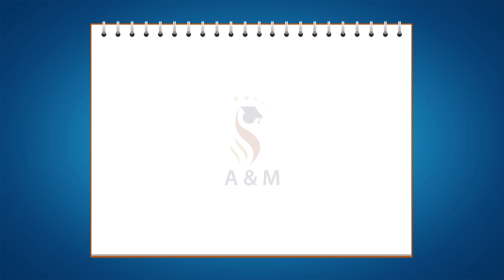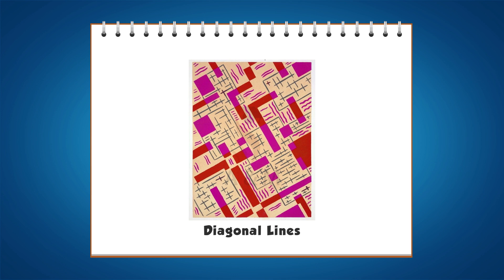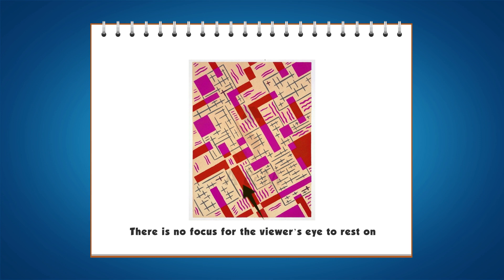Let's take an example of diagonal lines. This print design is entirely made up of diagonal lines and shapes. The diagonal lines lead in different directions and there is no focus for the viewer's eye to rest on. This shows how diagonal lines can be used to create a sense of movement, energy, or even uneasiness.